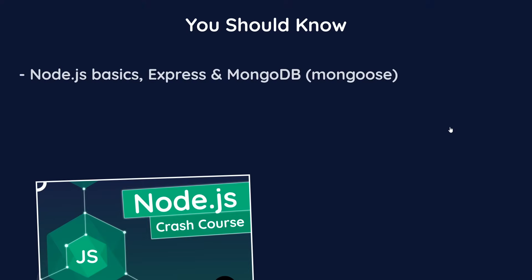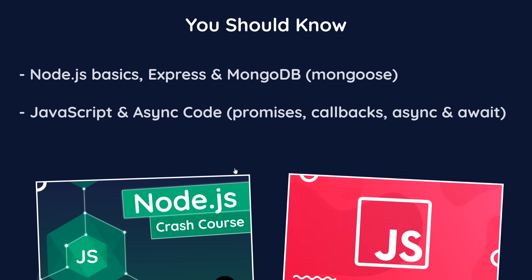Before we start, I want to make it clear that this is not a beginner Node tutorial — authentication can be a really complex subject. I'd expect you to already understand at least the very basics of Node, Express, and MongoDB using Mongoose: how to set up an Express app, hook it up with MongoDB, the different types of requests like POST and GET, and what middleware is. I'd also expect a decent grasp of JavaScript — in particular asynchronous code like promises, callbacks, async/await, and JSON data.